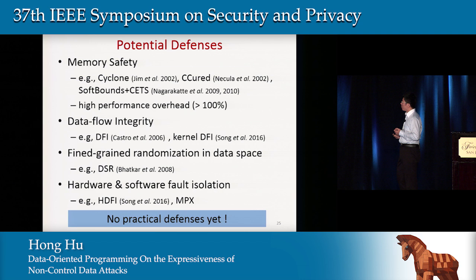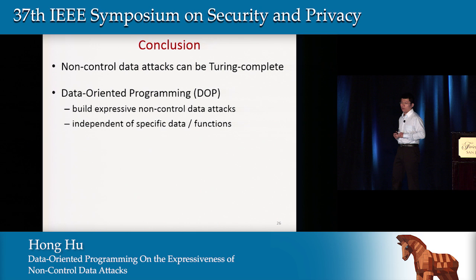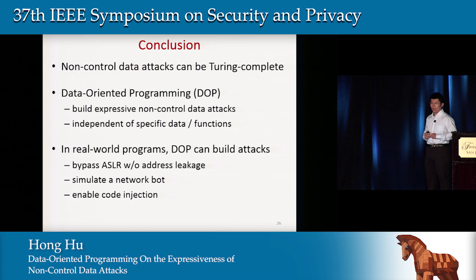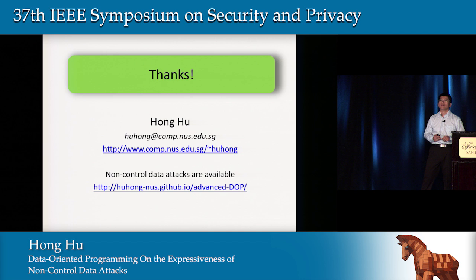In summary, we show that non-control data attacks can be Turing-complete, and we propose data-oriented programming as a general way to build expressive non-control data attacks. These attacks are independent of any specific data or functions. We use DOP to build real attacks that can bypass ASLR without any address leakage, can simulate a network abort, or even enable code injection attacks. Thank you — I'm ready for questions.